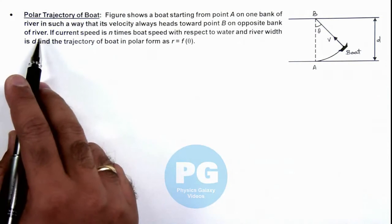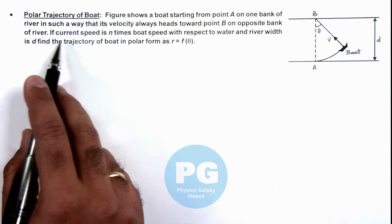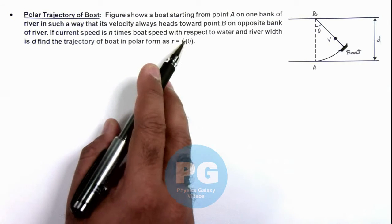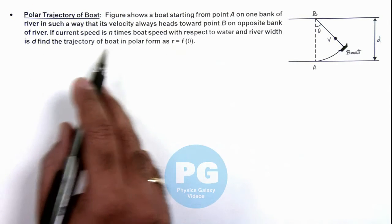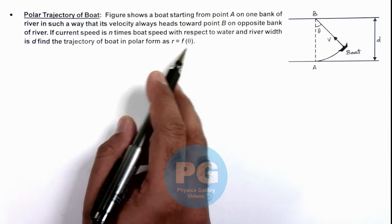And if current speed is n times the boat speed with respect to water and river width is d, we are required to find the trajectory of the boat in polar form as r equals f of theta.